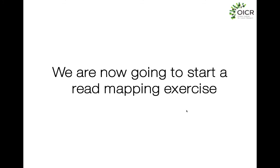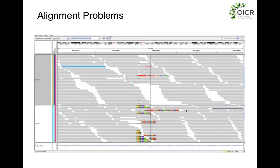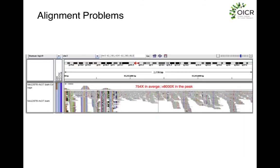If you have higher coverage at a specific location, it may be a very repetitive sequence or repetitive element, causing ambiguous reads that all map to those repetitive elements to pile up at that position. Your mapping quality would also be lower — if reads are fully ambiguous, they end up multi-mapping and are assigned mapping qualities of zero.